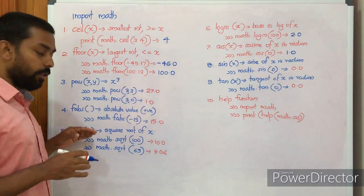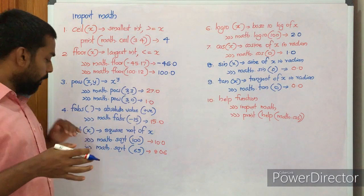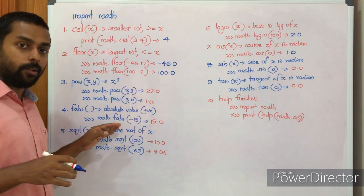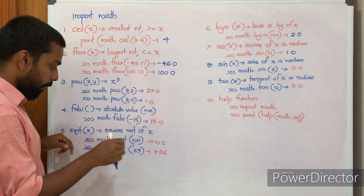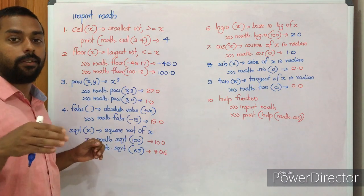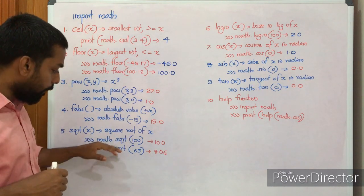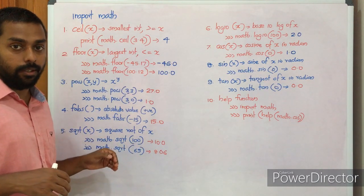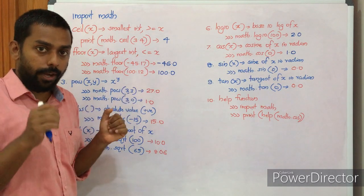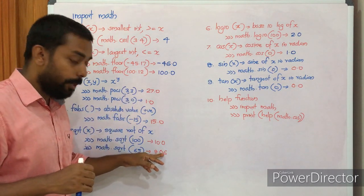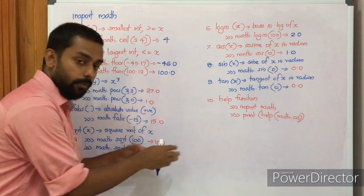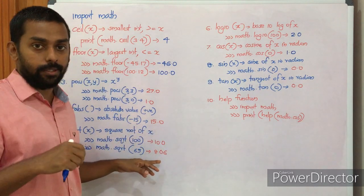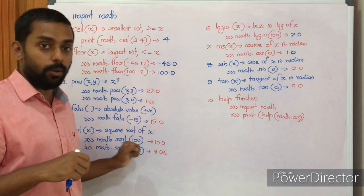Now we have the sqrt function. Sqrt returns the square root of a number. Here sqrt(x) returns the square root of x. We have two examples: math.sqrt(100) returns 10.0, and math.sqrt(65) returns approximately 8.06. It will not return a whole number — it returns 8.06, rounded off to 2 decimal digits.